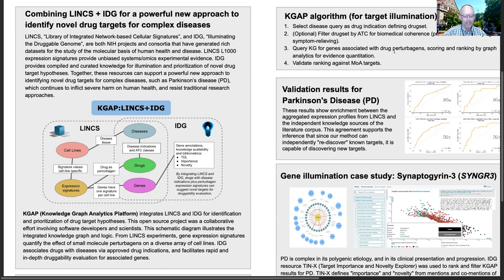From LINCS experiments, gene expression signatures quantify the effect of small molecule perturbogens on a diverse array of cell lines. IDG associates drugs with diseases via approved drug indications and facilitates rapid and in-depth drugability evaluation for associated genes.